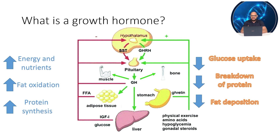But how does it act? In fact, growth hormone is a classical example of biohacking. Its main function is redistribution of energy and nutrients in the body between different organs and tissues.